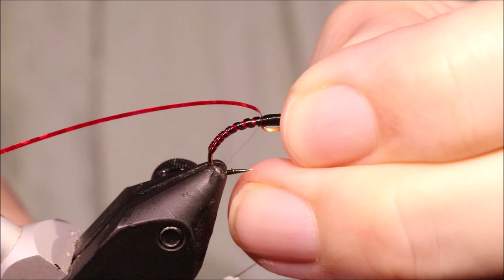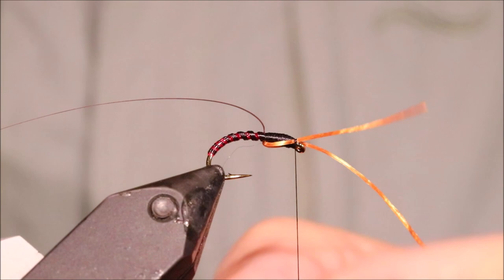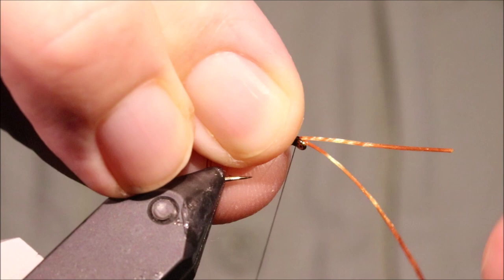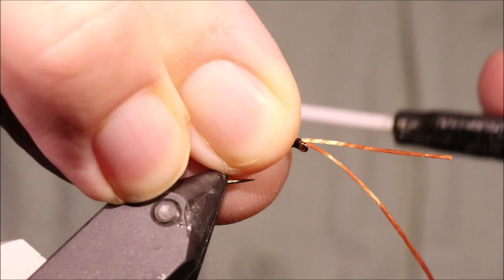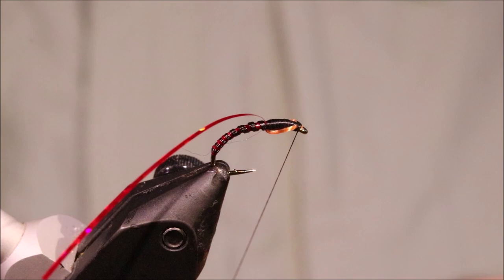Wing buds, you just pull them forward onto the top. A couple of wraps to gather them. Make sure they're sitting where you want them. That looks okay to me.